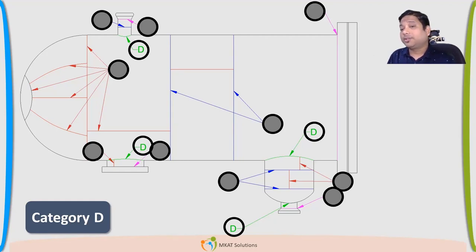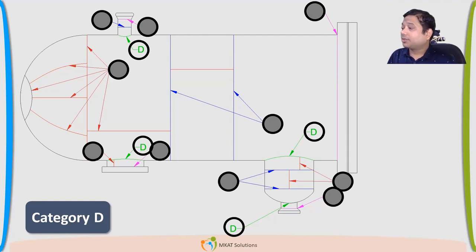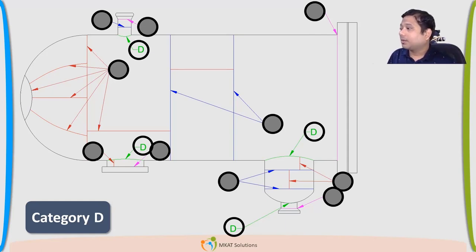If we have a 2:1 ellipsoidal head connected to a shell, what joint category will you give? In a sphere or hemispherical head, what kind of stresses do we have — longitudinal and circumferential, or just one type? In a shell we have two types primarily: circumferential stresses and longitudinal stresses.